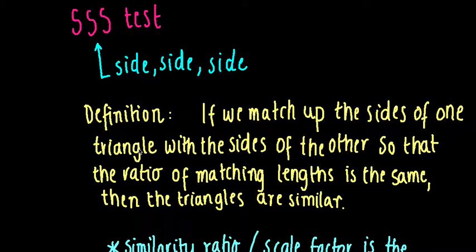Welcome Year 9 to this next video. This is a follow-on from the previous video which was looking at the AAA test — the Angle-Angle-Angle test for similarity — which proves that two triangles are similar. Now we're going to look at the other three tests. There are four altogether; we've looked at one and there are three left to go through in this video.